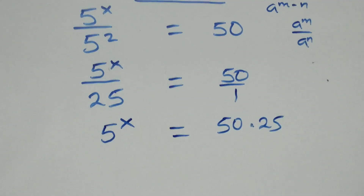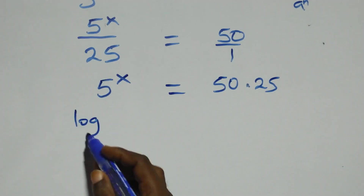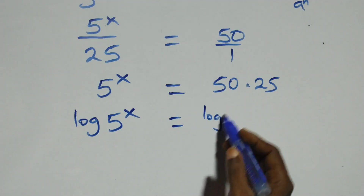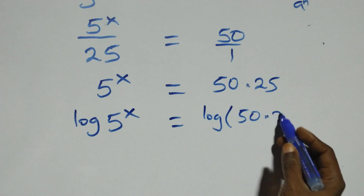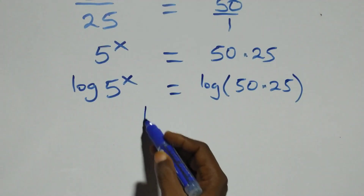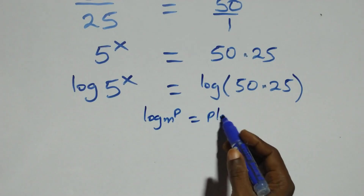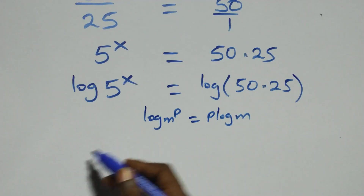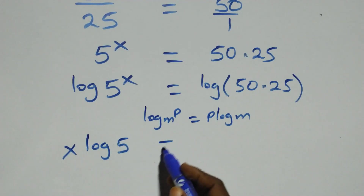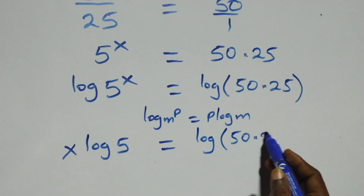The next step is to take the log on both sides. We have log of 5 raised to power x equals to log of 50 times 25. Here we apply the power rule of logarithms: log of m raised to power p is the same as p times log m. So we have x times log 5 equals to log of 50 times 25.